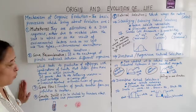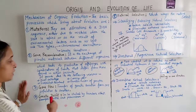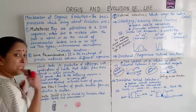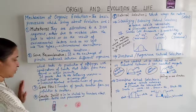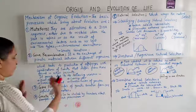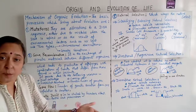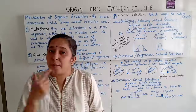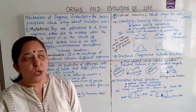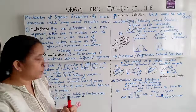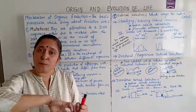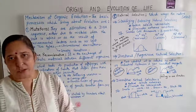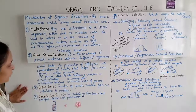Gene flow is the transfer of genetic variations from one population to another. Gene flow occurs due to emigration or immigration — when any particular organism comes into an area or moves out of it.